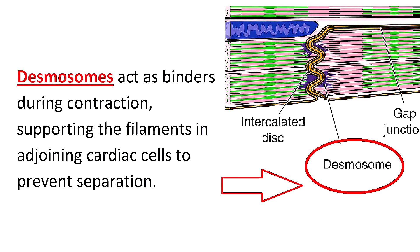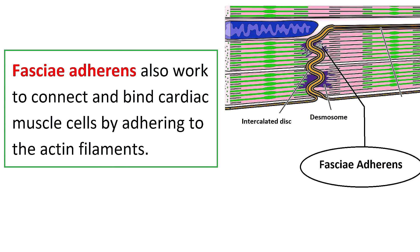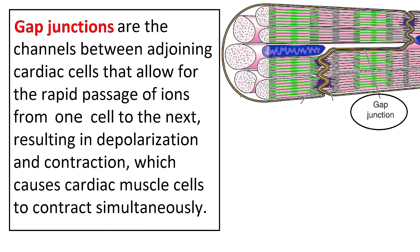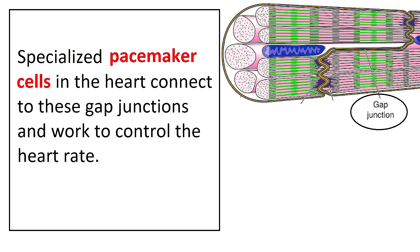Desmosomes act as binders during contraction, supporting the filaments in adjoining cardiac cells to prevent separation. Fascia adherens also work to connect and bind cardiac muscle cells by adhering to the actin filaments. Gap junctions are the tiny channels between adjoining cardiac cells that allow for the rapid passage of ions from one cell to the next, resulting in depolarization and contraction, which causes cardiac muscle cells to contract simultaneously. Inside the heart, specialized pacemaker cells connect to these gap junctions and work to control the heart rate.